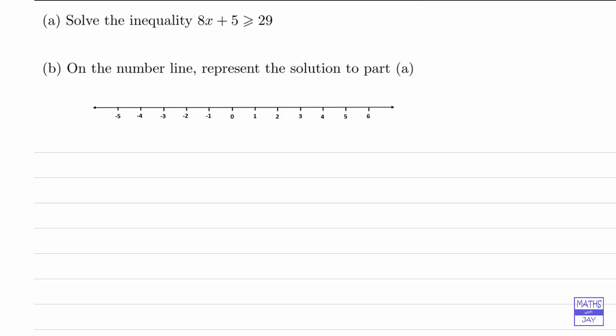So the inequality is that 8x plus 5 is greater than or equal to 29. Now if you haven't seen something like this before, it may be a good idea to think about the related equation. So we would simply write down, instead of greater than or equal to, just equals.